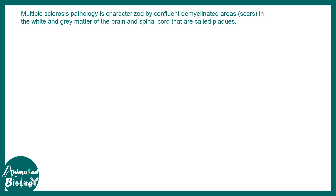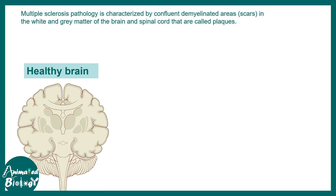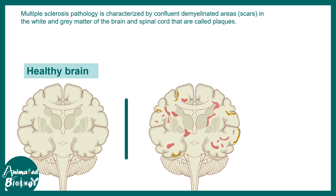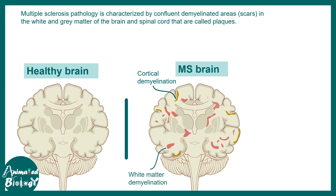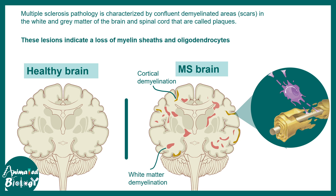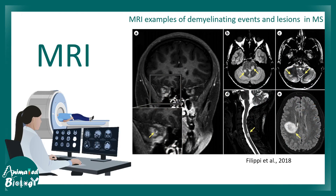MS pathology is characterized by confluent demyelinated areas throughout the CNS. Comparing a healthy brain coronal section to an MS brain, one can see many lesions present in the cortical region — cortical demyelination is common — alongside white matter demyelination. When the myelin sheath is damaged, the conduction velocity of the neuron is affected because myelin acts as an insulator. These lesions can be detected using MRI, where multiple lesions are visible marked by yellow arrows.